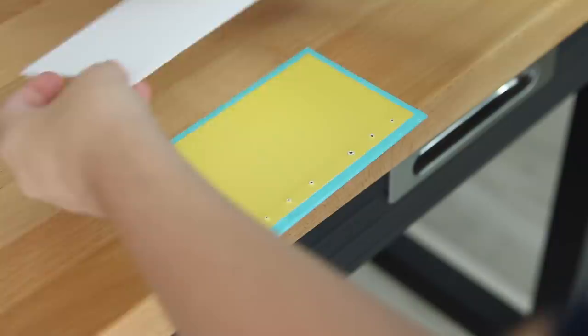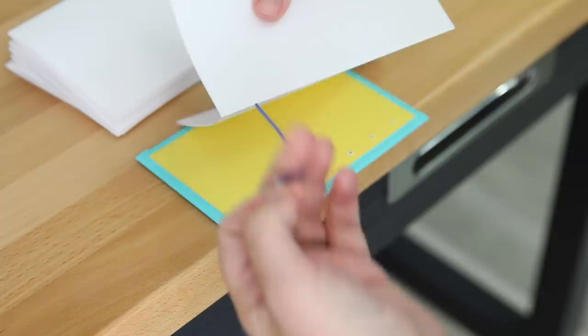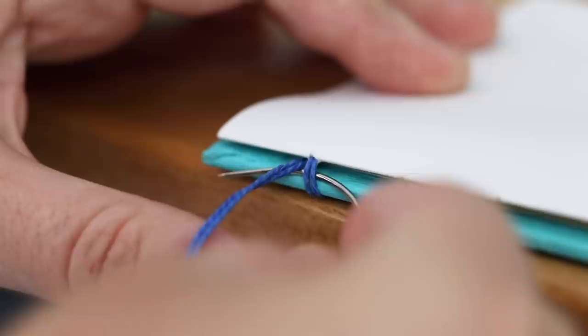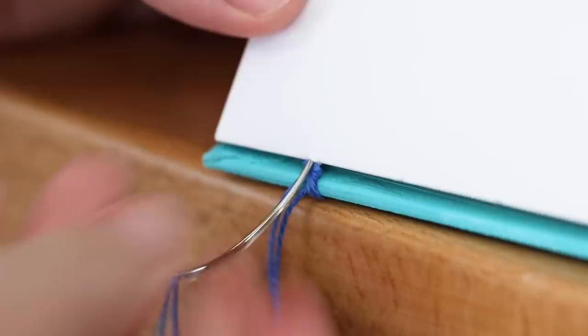We're going to start with the back cover and the last signature, making sure to keep all the signatures in the same order that you pierced them. Start from one end of the signature—it doesn't matter which end—and pull all the way through to the outside. Loop around the cover, loop around that, and this is where having a curved binding needle helps. It really helps to get around those curves, but it can also be done with a straight needle. Return back into the signature.